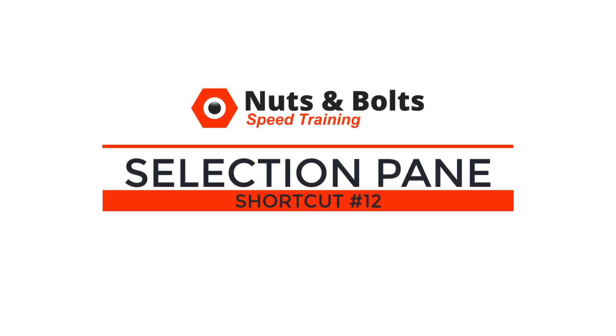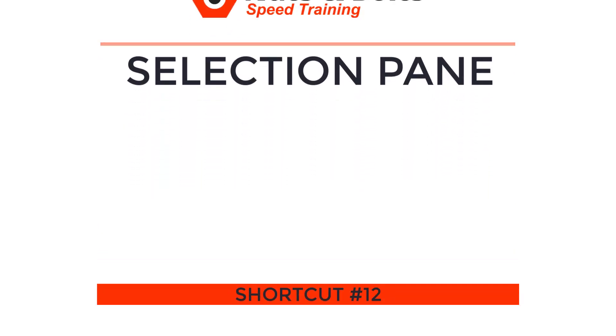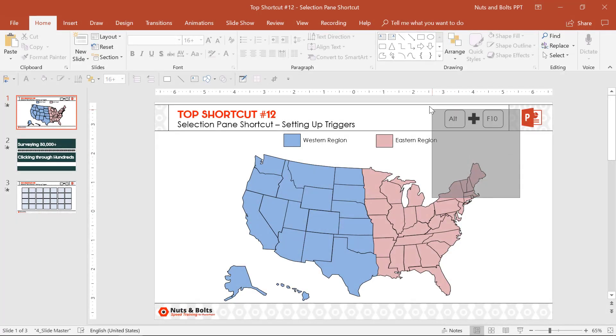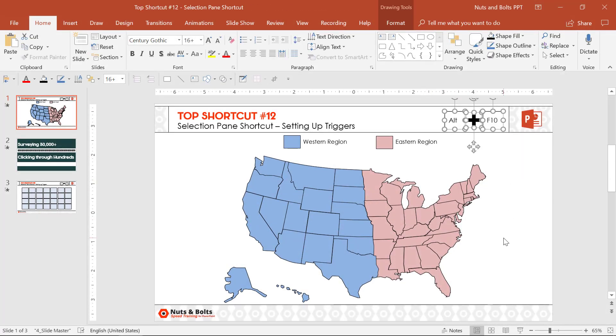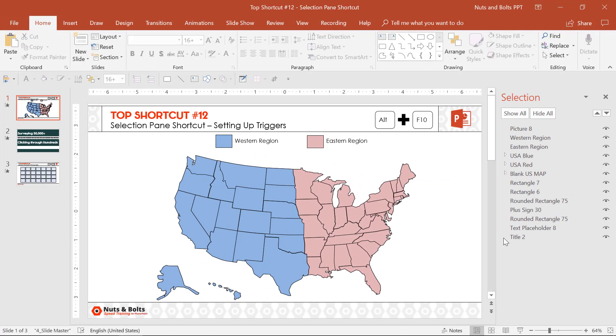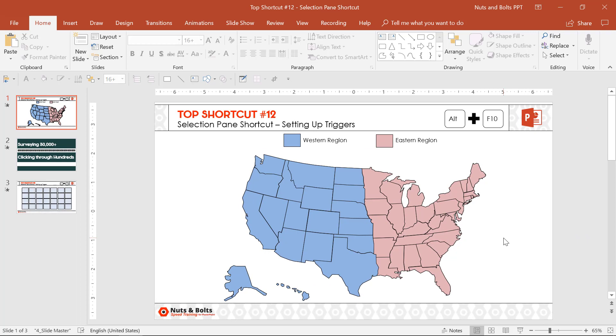Top shortcut number 12, the selection pane shortcut. The selection pane shortcut is Alt+F10. Alt F10 once will open up the selection pane. Alt F10 a second time will close it out.